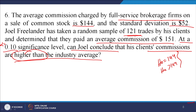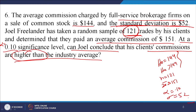The sample size is 121. The sample mean x-bar is 151, and alpha is equal to 0.10. We also have the population standard deviation given as 52. This is a case of a one-tailed upper-tailed, or right-tailed, test with this set of information.